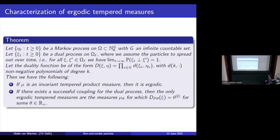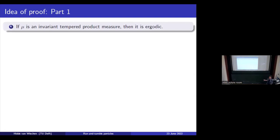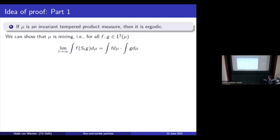Let's look at the proof idea. For the first statement — if mu is an invariant tempered product measure then it is ergodic — we actually prove an even stronger statement: that mu is mixing. And if a measure is mixing, then it is also ergodic. The definition of mixing comes down to asymptotic independence of F and G when we apply the semigroup. We will first show the mixing property for our duality functions.